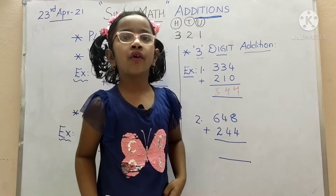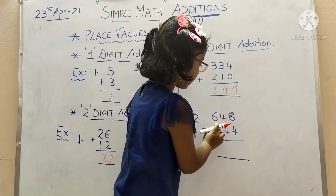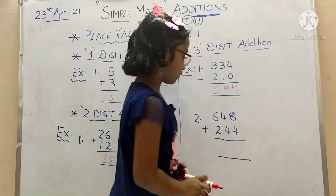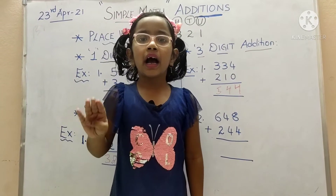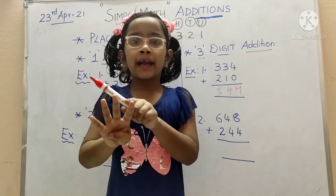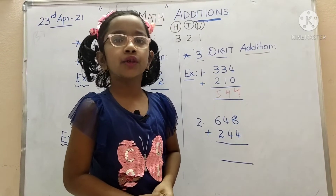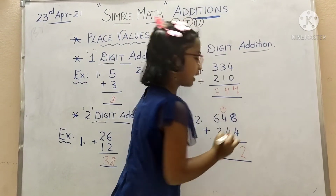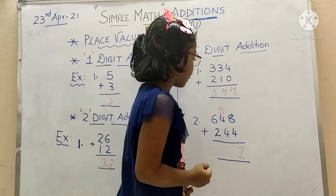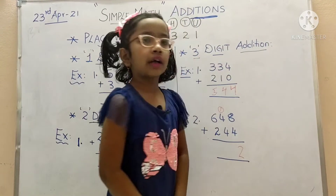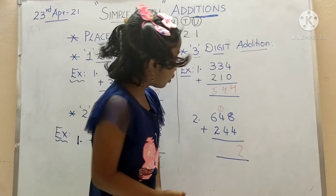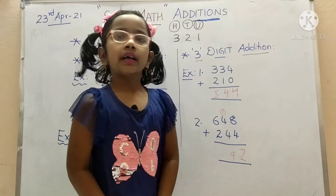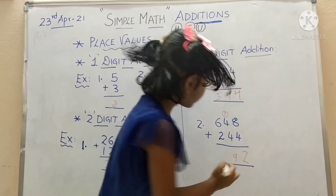Now the second one: six hundred and forty-eight plus two hundred and forty-four. We'll start from the units place: eight plus four — eight in mind, four in hand — after eight: nine, ten, eleven, twelve. We cannot write twelve in the units place — we write two in units place, one in tens place. That is known as carry over. Tens place: four plus four equals eight, plus one carry over equals nine. Hundreds: six plus two — six in mind, two in hand — seven, eight. The answer is eight hundred and ninety-two.